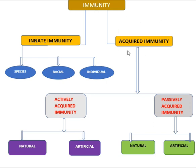Now in this part, we are going to discuss the second type of immunity — acquired immunity. Acquired means the immunity you acquire during your lifetime. This acquired immunity is also named as adaptive immunity, induced immunity, or specific immunity. It is again of two types: actively acquired immunity and passively acquired immunity. Both active and passive immunity can be by the natural mode or by the artificial mode.